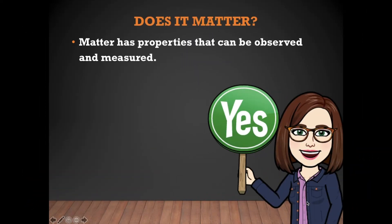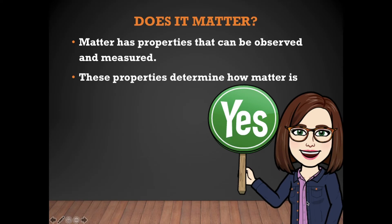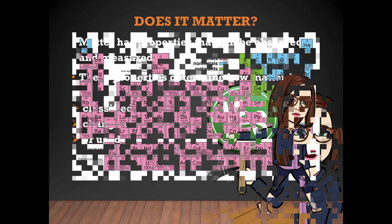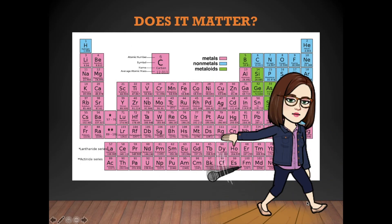Does it matter? Matter has properties that can be observed and measured. These properties determine how matter is classified, changed, or used. It does matter. Scientists got together and organized the periodic table of elements based on their physical properties — I think that's pretty cool and definitely a great way to organize all of the ingredients you can find here on planet Earth. Thank you for joining me today. I hope you learned a lot about the physical properties of matter, and I think it's a huge mic drop that scientists used physical properties to organize the periodic table of elements. Until next time!